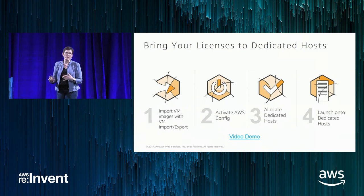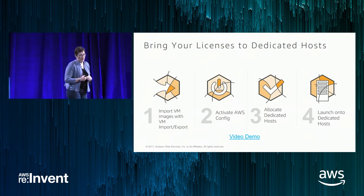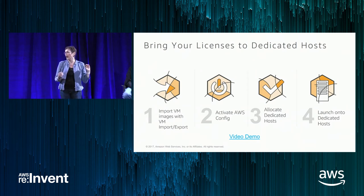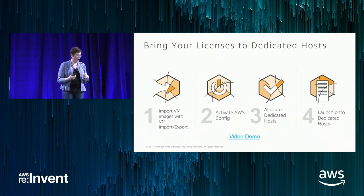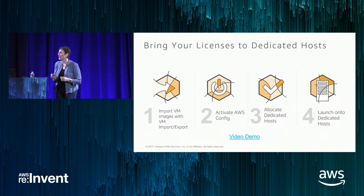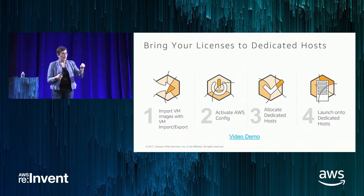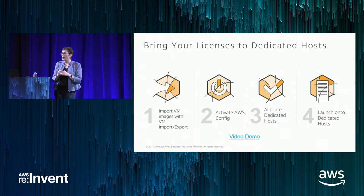To actually bring your licenses to the dedicated host: first, import your VM using our VM import tool. Then use the AWS Config service to help keep track of your license usage. Next, allocate a host, then start launching instances and specify which host to place them on. We have a great video demo for those who want to walk through this in PowerShell — I encourage you to watch it when you're home.